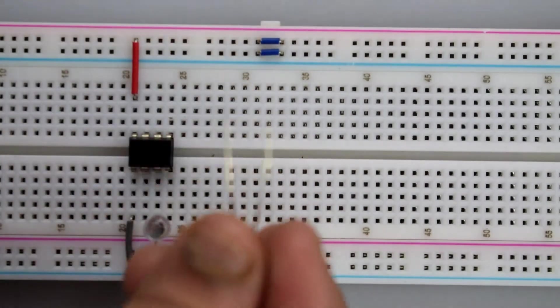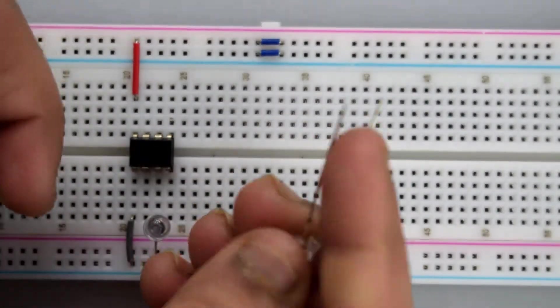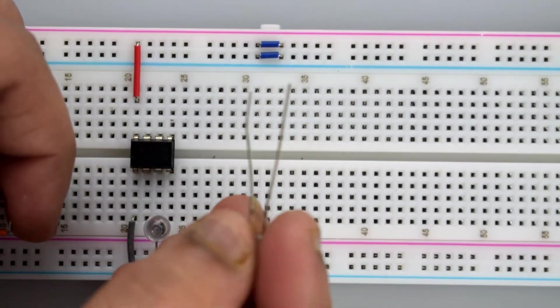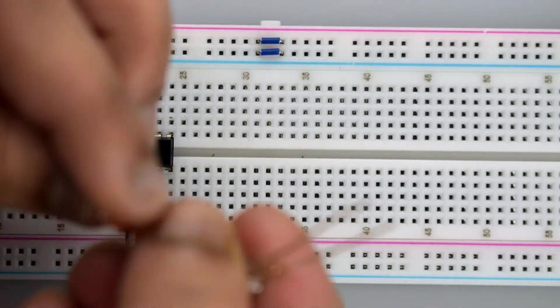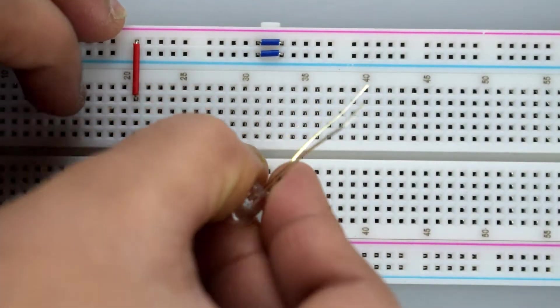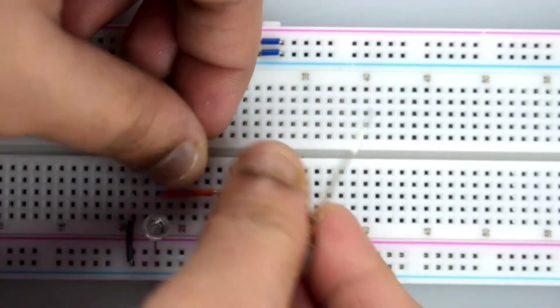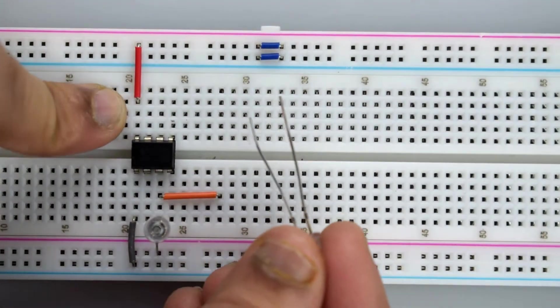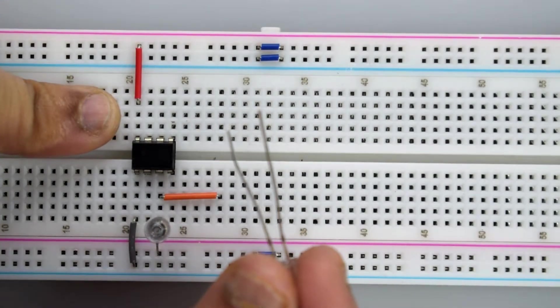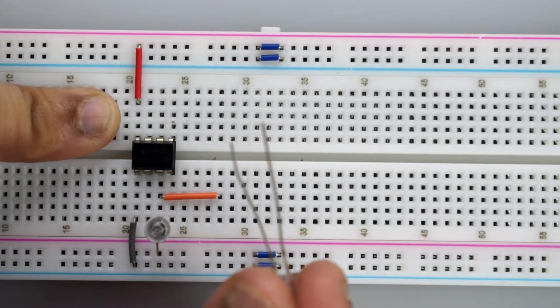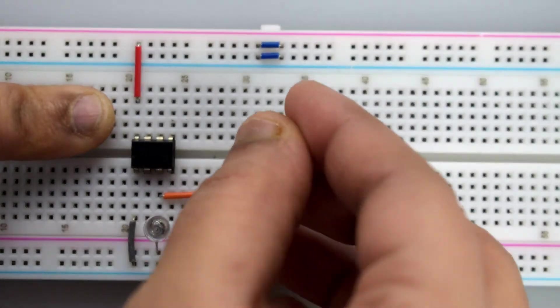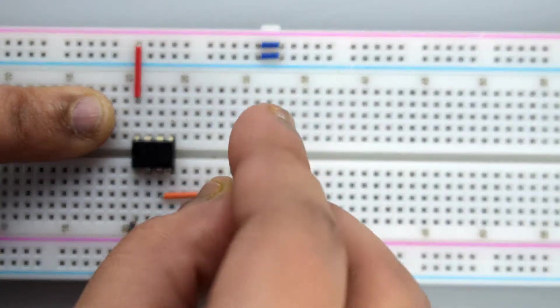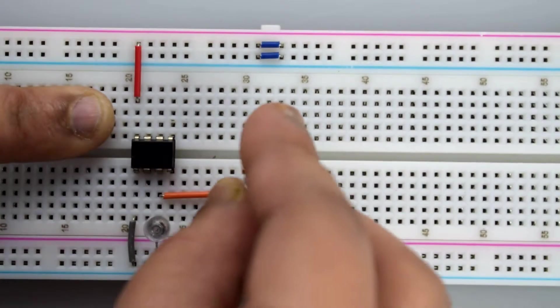Now connect another LED to the third pin of the 555 timer IC, and the negative leg of this LED to the negative rail on the breadboard.